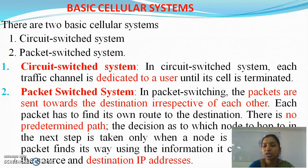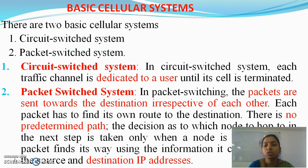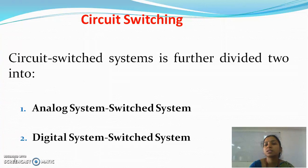In a packet switching system, packets are sent towards the destination independently of each other. Each packet has to find its own route to the destination; there is no pre-determined path. The decision as to which node to hop to next is taken only when a node is reached. Each packet finds its way using the information it carries, such as the source and destination IP addresses.